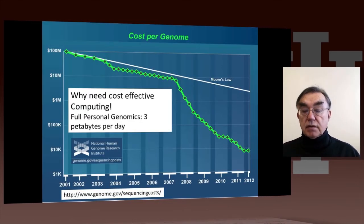Here is an example related to the genome, which plots the cost per genome. In 2012, the cost per genome is around $10,000, and it started at $100 million. Well, not so long ago, that was 2001.